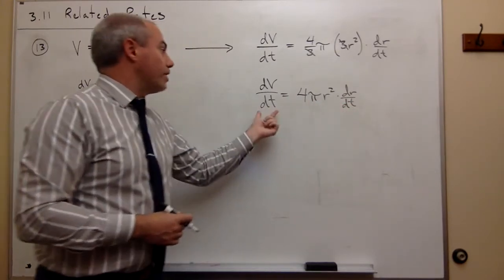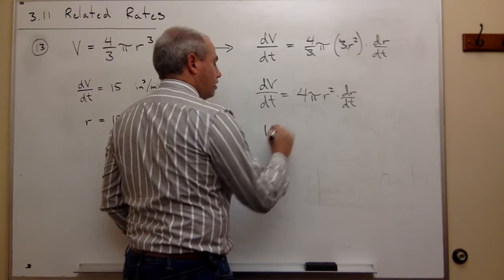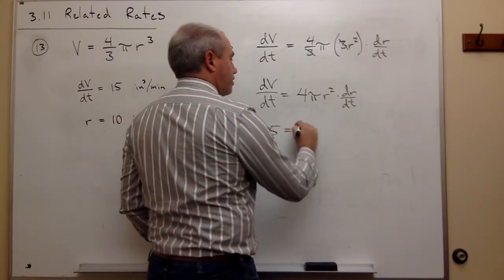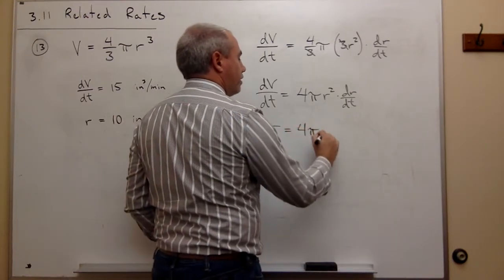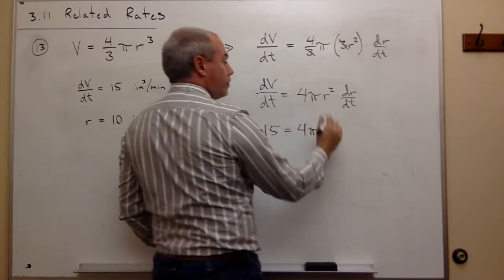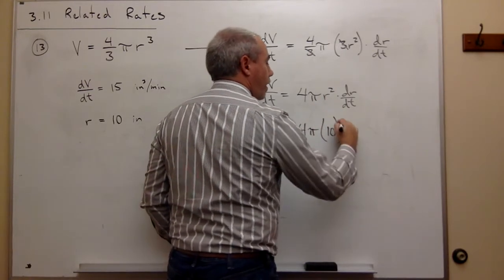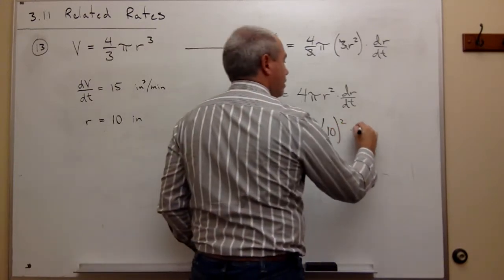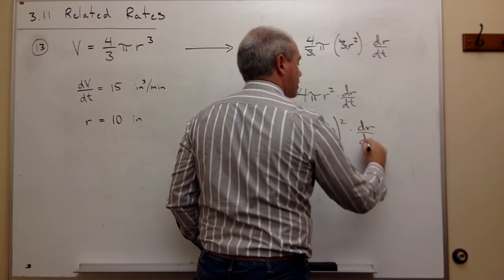We know that dV/dt is 15, and on the other side I have 4π times r, which is 10, squared times dr/dt.